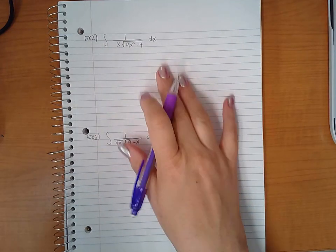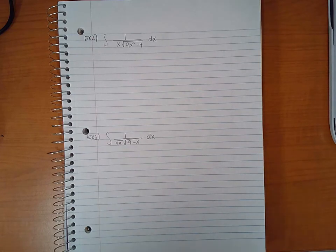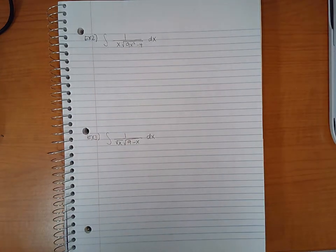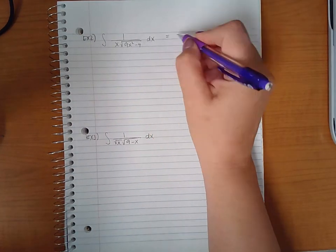Okay, for example two, we have this problem here, so let's go ahead and try it. So now this one, we do have a variable outside, so it mostly identifies with number three from the theorem, but we're going to go ahead and continue.